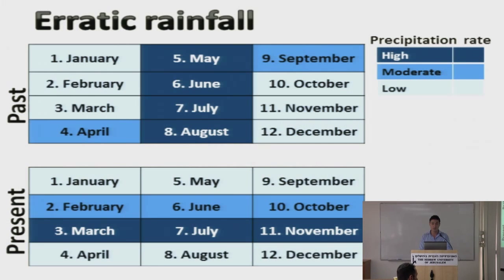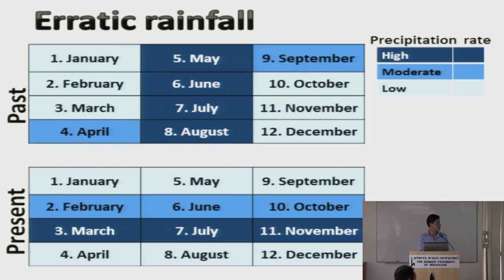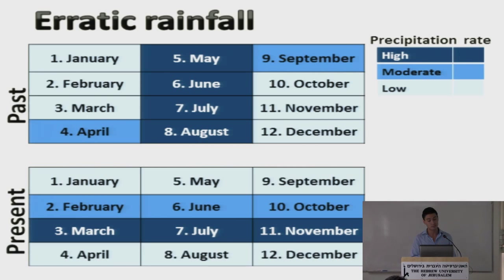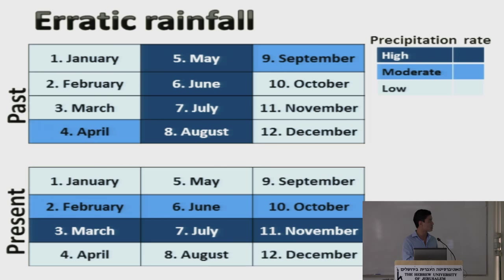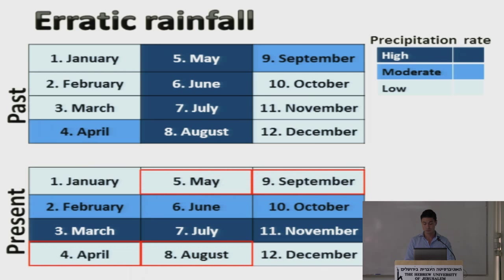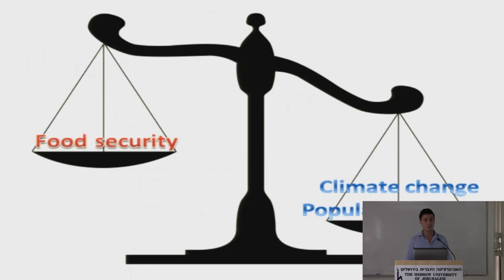This has caused erratic rainfall. Before, the rainfall was just concentrated in a season — it was seasonal. While in the present it's more erratic. There might be rainfall in just a couple of months, then a period of drought, then rainfall again. This may cause lots of damage to crops. Climate change and population growth put a lot of weight on food security, so certain actions must be done to balance the equation.